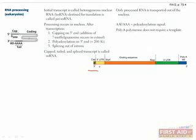When RNA polymerase 2 first transcribes mRNA, it's first called a heterogeneous nuclear RNA, or hnRNA. It needs to go through a few processing steps in the nucleus before it's officially an mRNA.